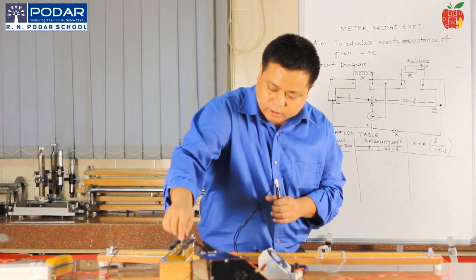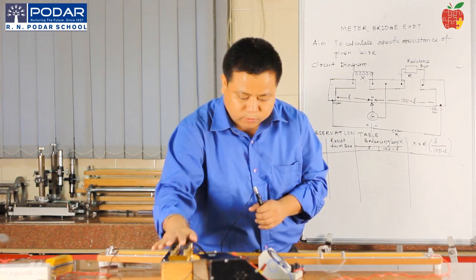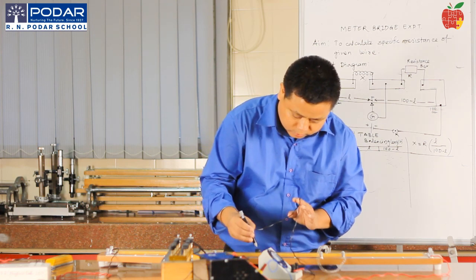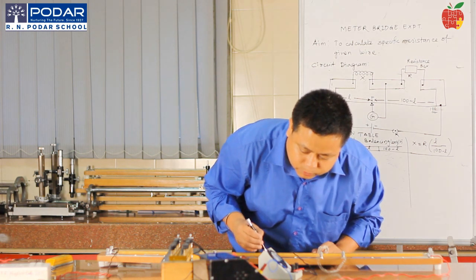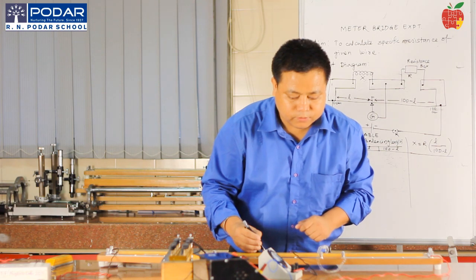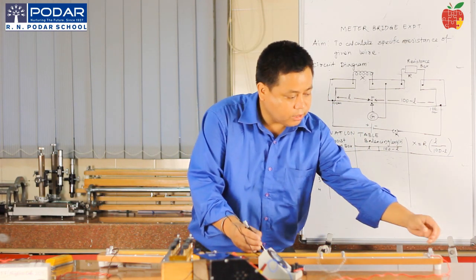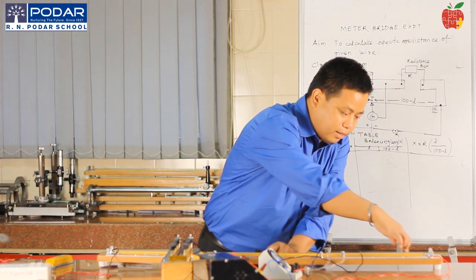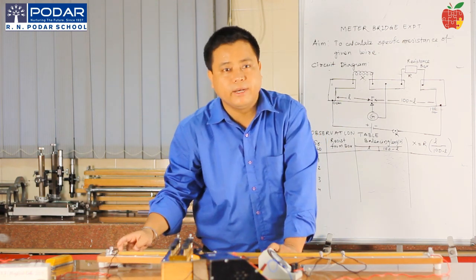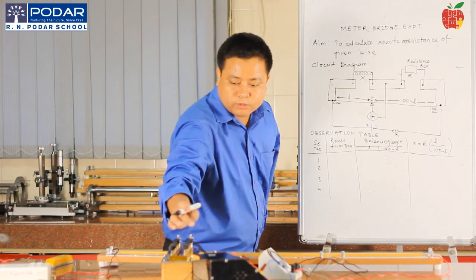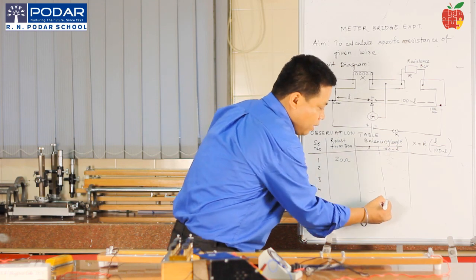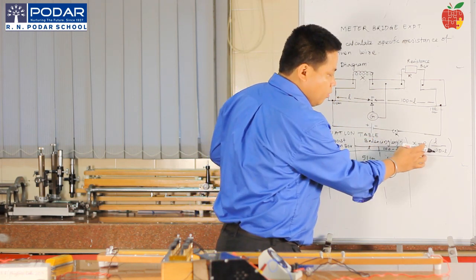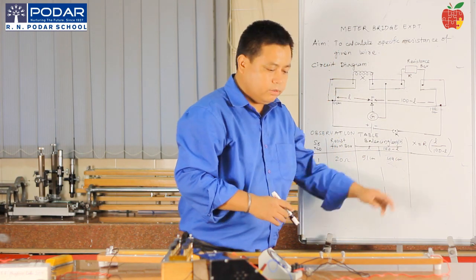I have taken out 20 ohm resistance from the resistance box. I will try to find the position where the galvanometer reads null deflection or zero. See, the galvanometer is now at null deflection at this particular position. We have to note down this position — remember where the positive connection is connected, because from this only you calculate. It is coming to nearly 51 cm. This length is called L, and the other part is 100 minus L, which is 49 cm. So for 20 ohm resistance, the balancing length L is 51 cm.